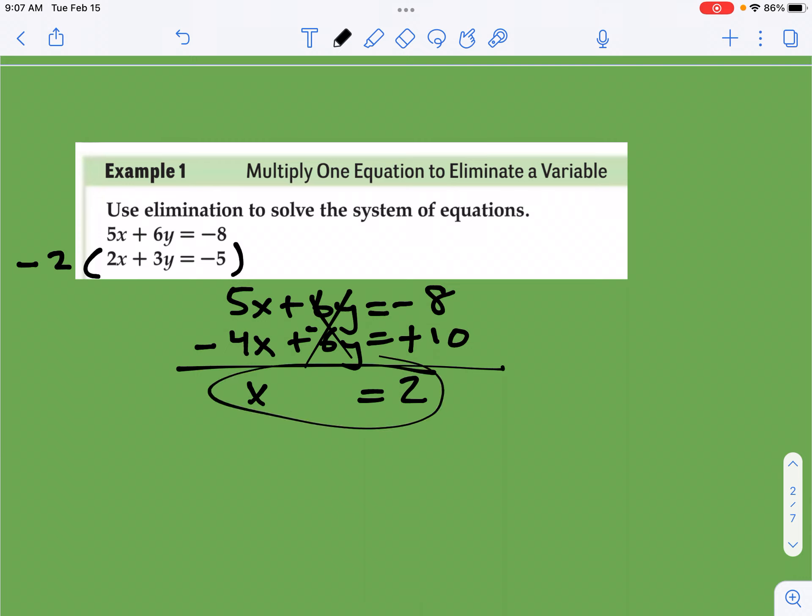So let's take this then. Let's plug it into the original bottom equation. So 2 times 2 plus 3y equals negative 5. Notice I'm using this, not what we did to it, not the Frankenstein equation, but just the original. So 2 times 2 is 4 plus 3y equals negative 5. We're going to subtract 4 from both sides. And you're going to get 3y is equal to negative 9, which means that y, when you divide both by 3, is equal to negative 3. So my solution is the point 2, negative 3.